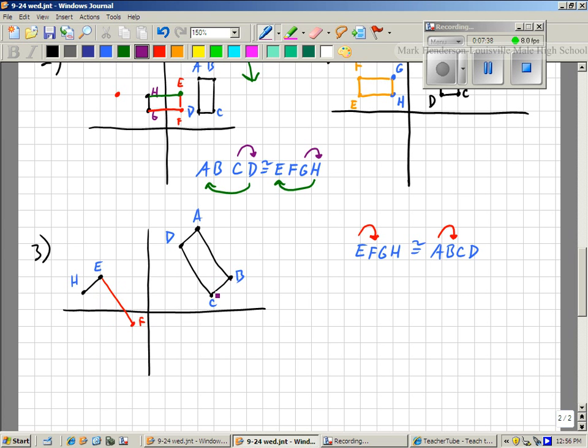B goes left 1, down 1 to get to C. So from F to G, I go left 1, down 1. Then I could, again, I could check to see if I did it right. I go up 1, 2, 3 to the left 2. I go up 1, 2, 3 to the left 2, and I see that I was right.